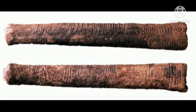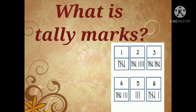Early Europeans and African cultures used bones with lines carved into them to denote numbers using tally marks. This could be considered the first tally chart — a form of data collection and representation. Tally marks are represented by this symbol, where each mark represents one piece of data.